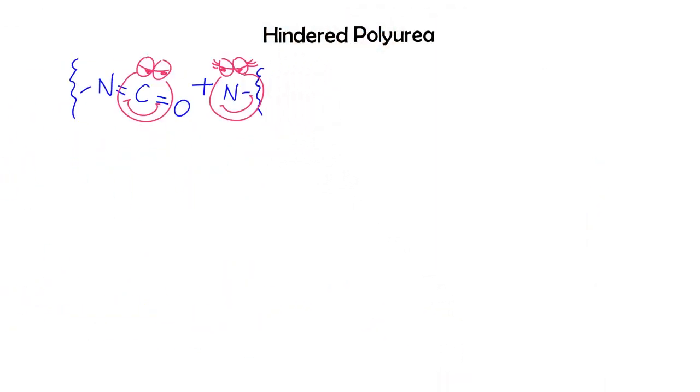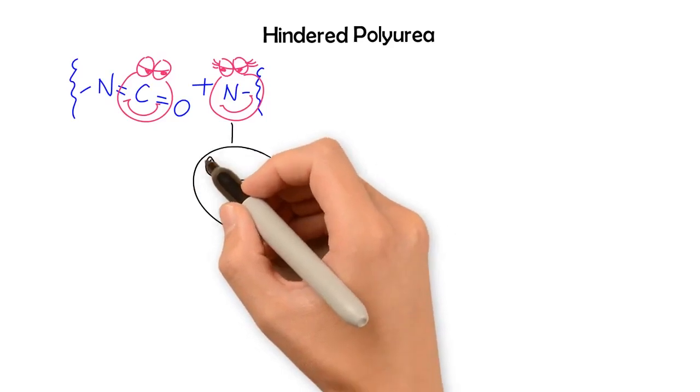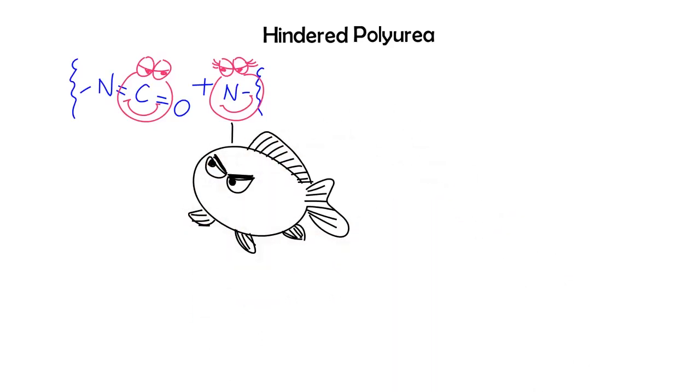But in hindered polyureas, a big functional group, we call it a hindered substituent, is attached to the nitrogen atom on the amine.